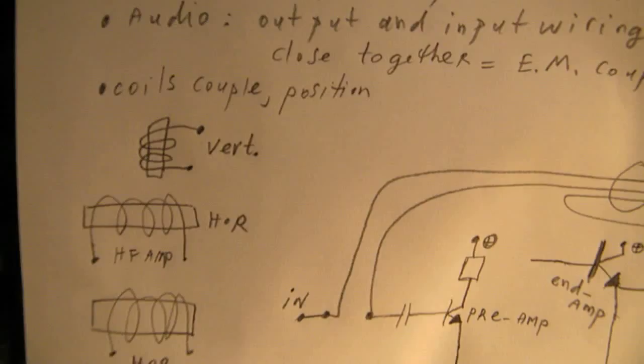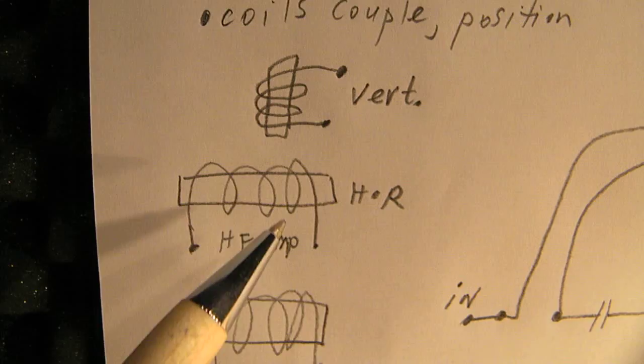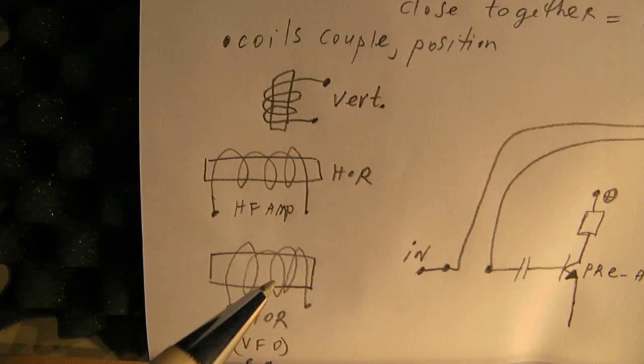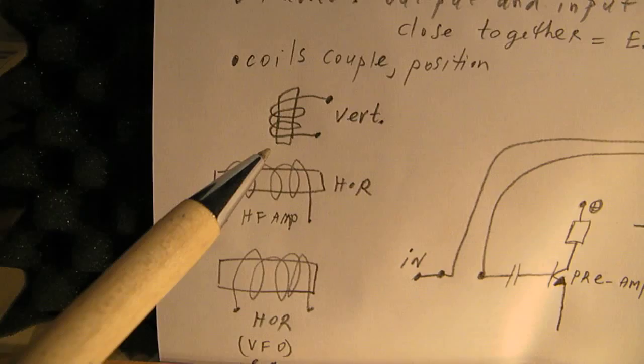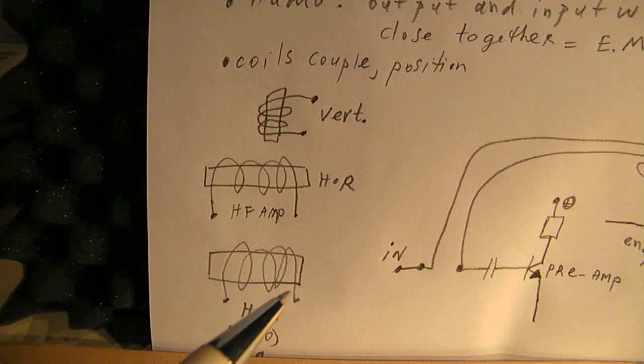And I've indicated that here also: vertical, horizontal, and horizontal again. To prevent decoupling, mount one coil in the horizontal position and one in the vertical position.